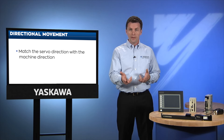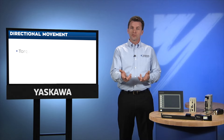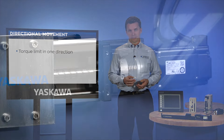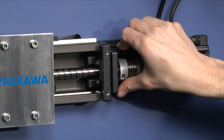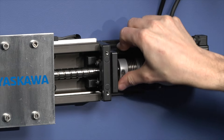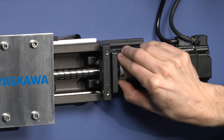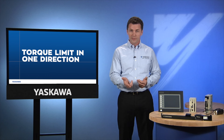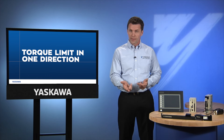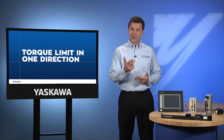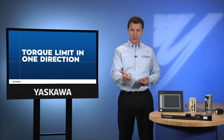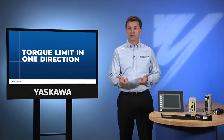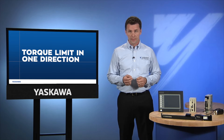For example, the servo may use a protective torque limit in one direction but not in the other. I can manually overpower the motor in one direction, but I can't overpower it in the other direction. So you can see why it's important to understand which direction is forward and which is reverse. In some circumstances, this could create catastrophic damage to your machine if not properly configured.